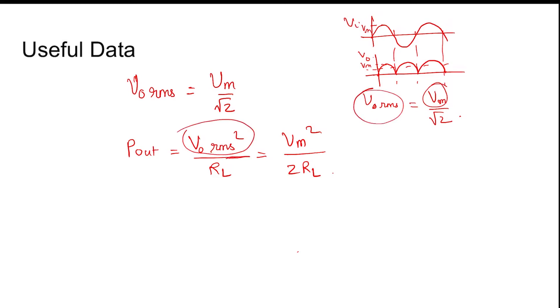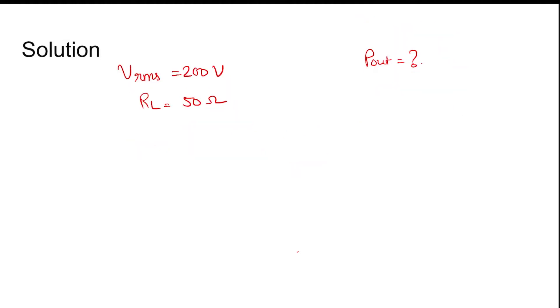Now coming to the solution: V_rms is 200 volts because V_m by root 2 equals 200. This is the output RMS. Therefore, P_out equals V_rms squared divided by 50, so 200 squared divided by 50.